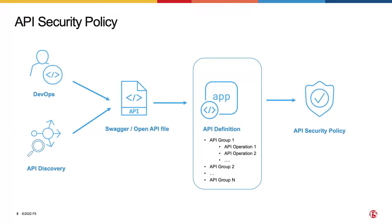We've talked about building the API inventory as the first step in securing APIs. Now that we have the API specification file — obtained either directly from the DevOps team or by doing API discovery — we will import it and create the API definition, which allows us to build the service policies enforcing the API security controls. An API definition can be thought of as a list of API groups that bundle together one or more API operations. This helps with service policy definition: instead of specifying rules for every single API operation, you only create rules for the few API groups you define. The simplest configuration would be a single rule matching all your API operations, and this API group is created by default when you create your API definition.